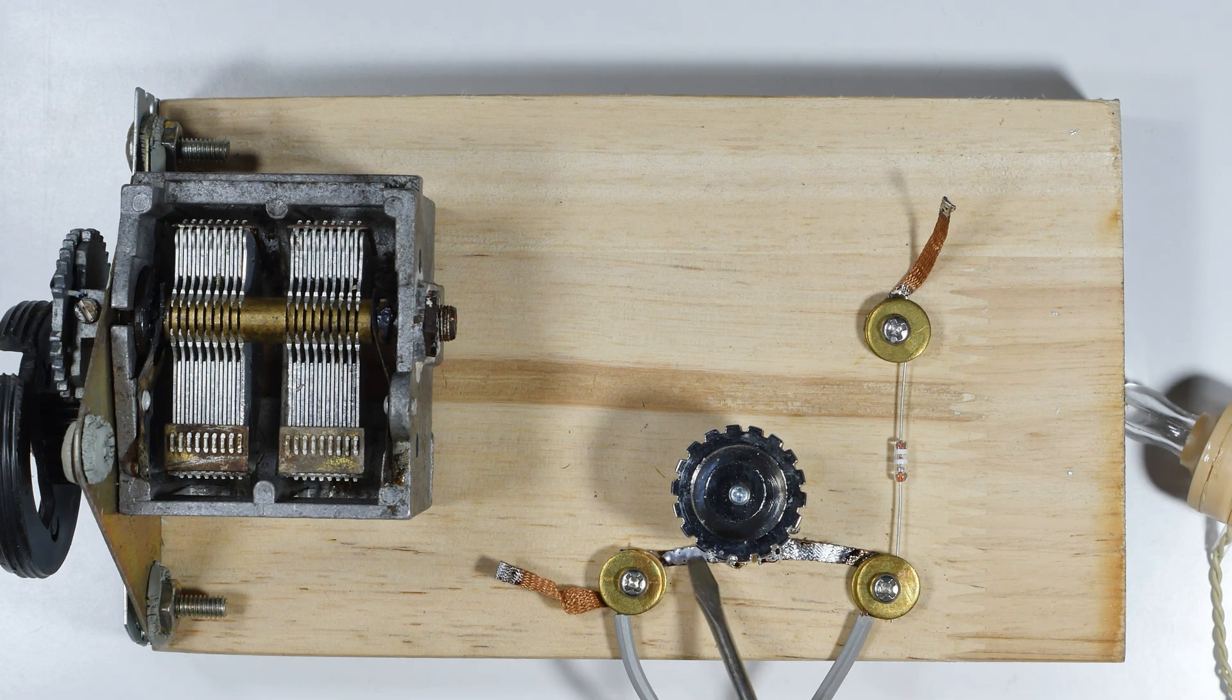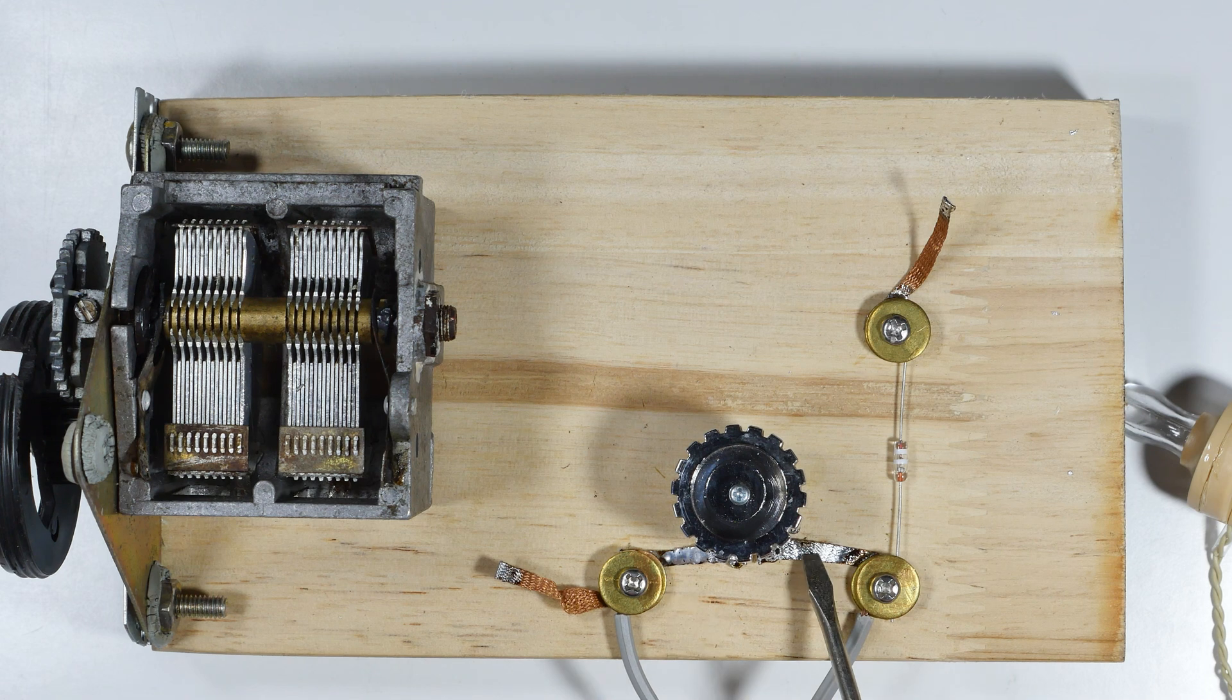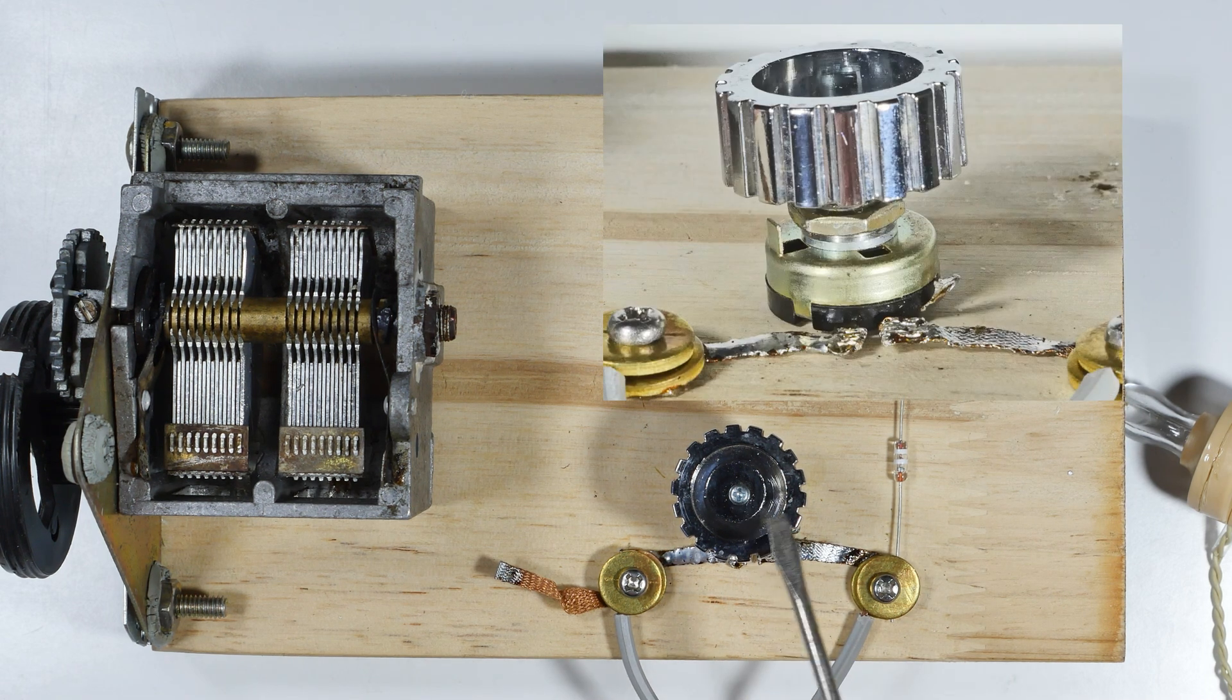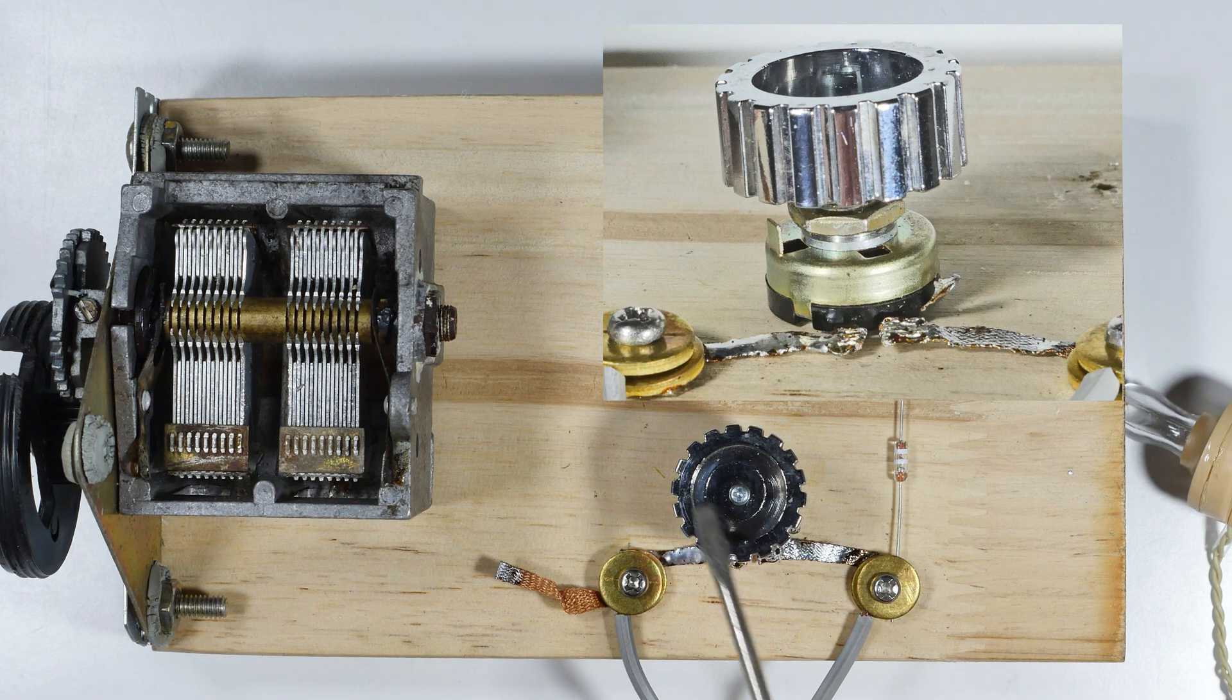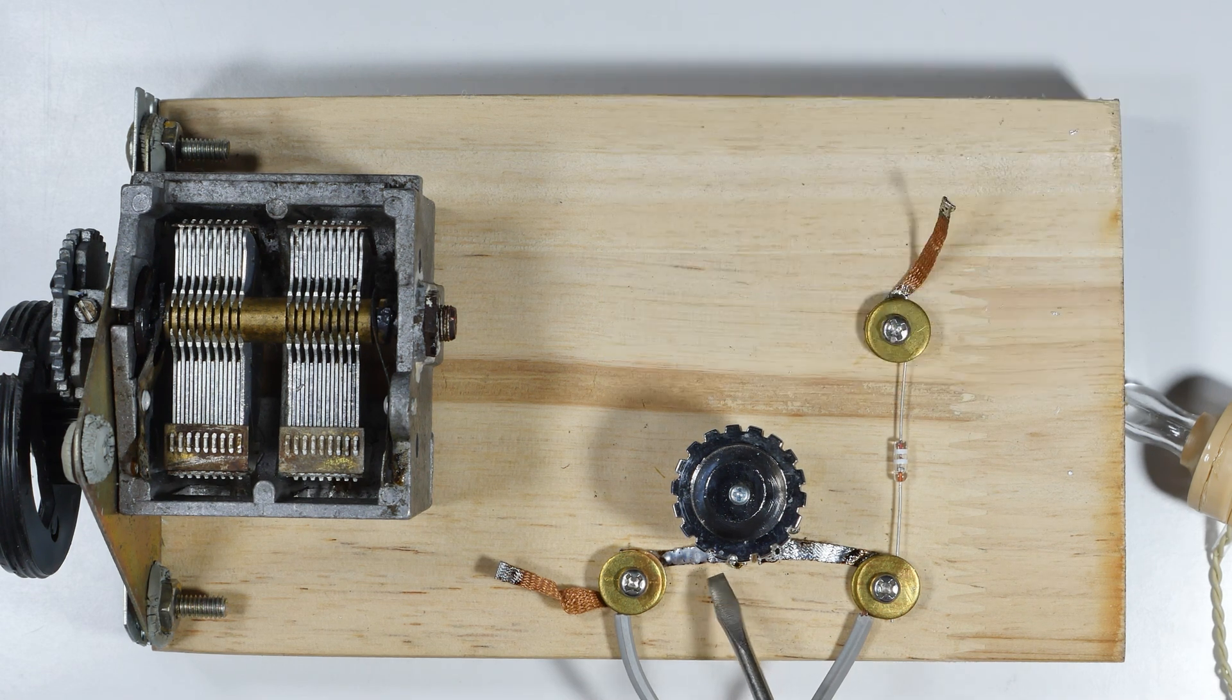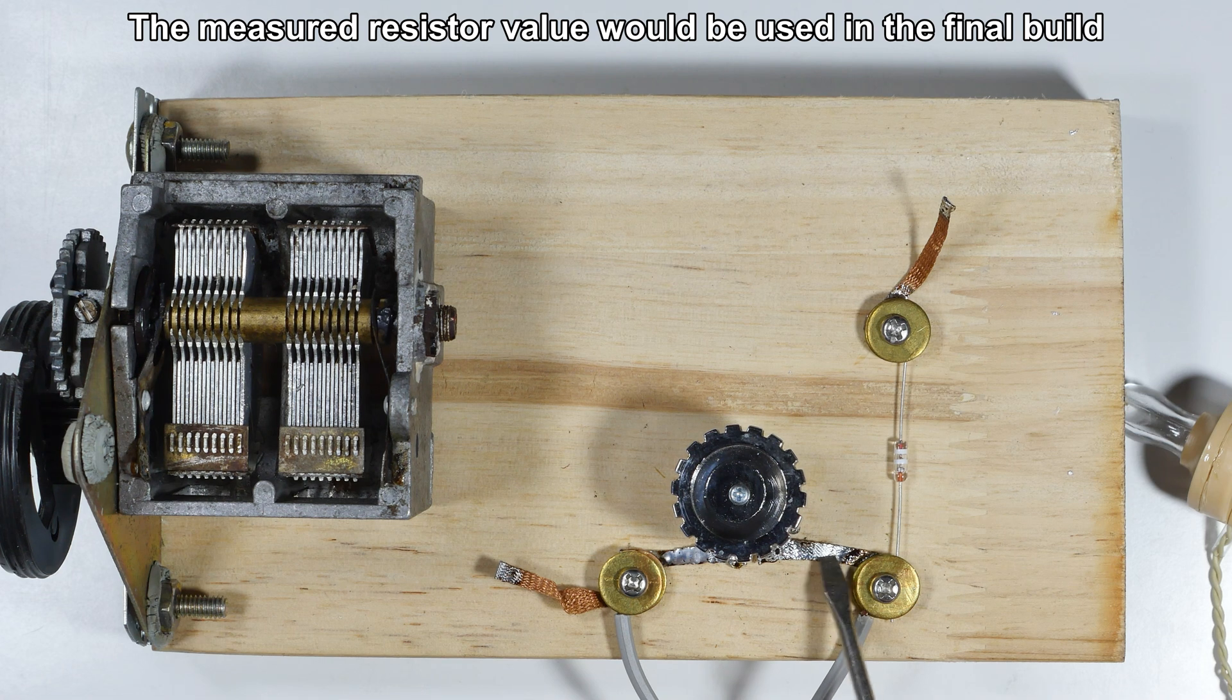Here, normally we would have a fixed resistor, but in this case I've added a variable resistor so that I can very quickly make a determination when I'm testing and decide what's the best value that works best in this particular radio. Then I can measure that later and replace it with a fixed piece.